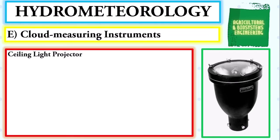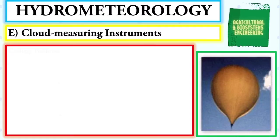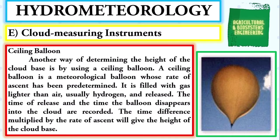Next, we proceed with the instruments used to measure cloud height. First, the ceiling light projector, which projects vertically a narrow beam of light onto a cloud base. The height of the cloud base is determined by using a clinometer located at a known distance from the projector to measure the elevation angle of the illuminated spot on the cloud. From trigonometry, the height of the cloud base equals the distance of the observer from the projector multiplied by the tangent of the elevation angle.